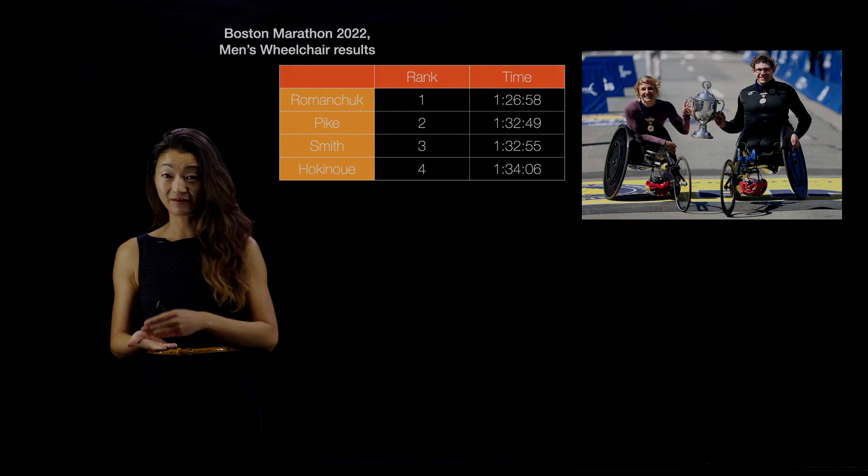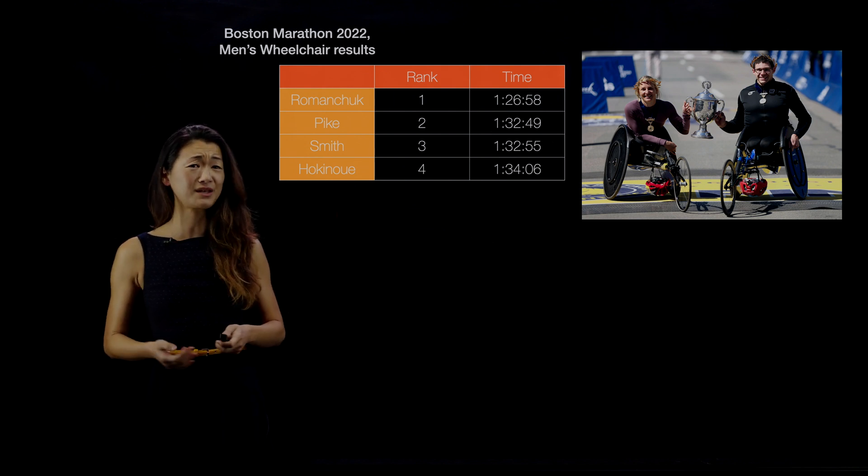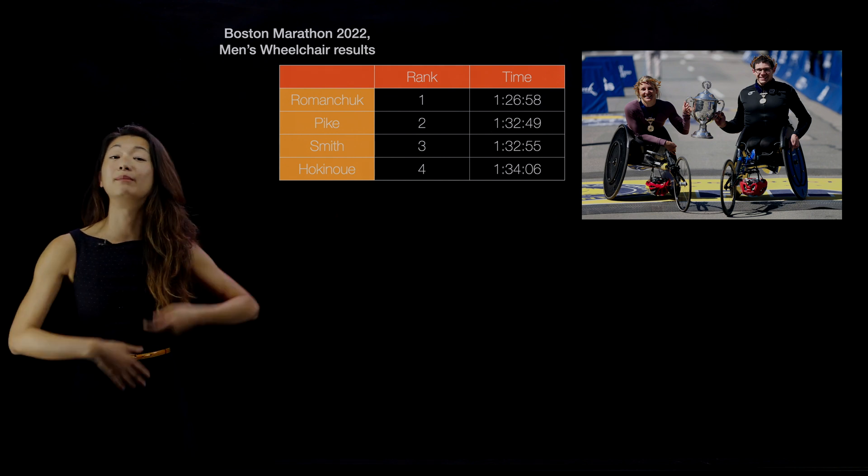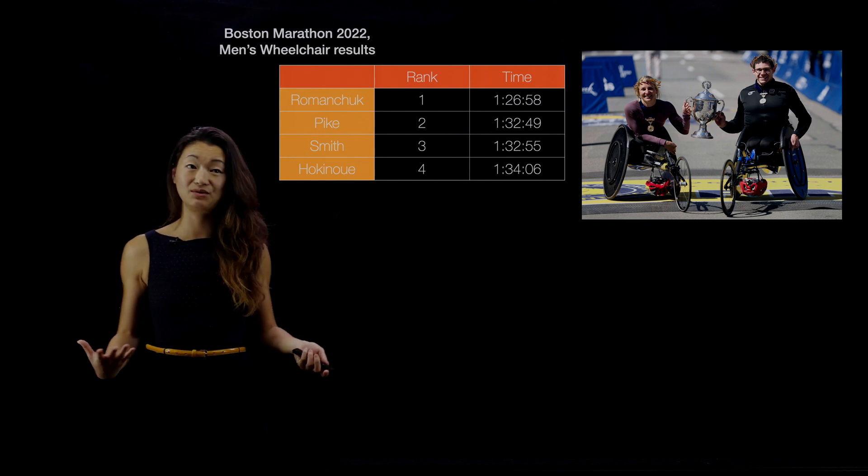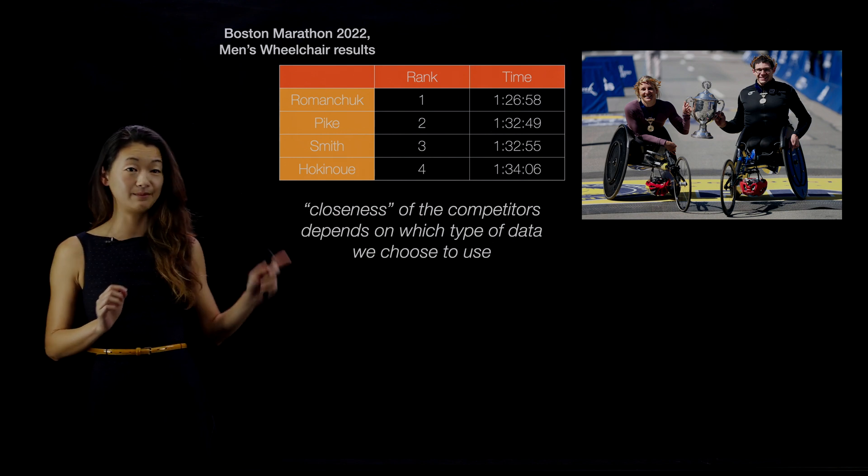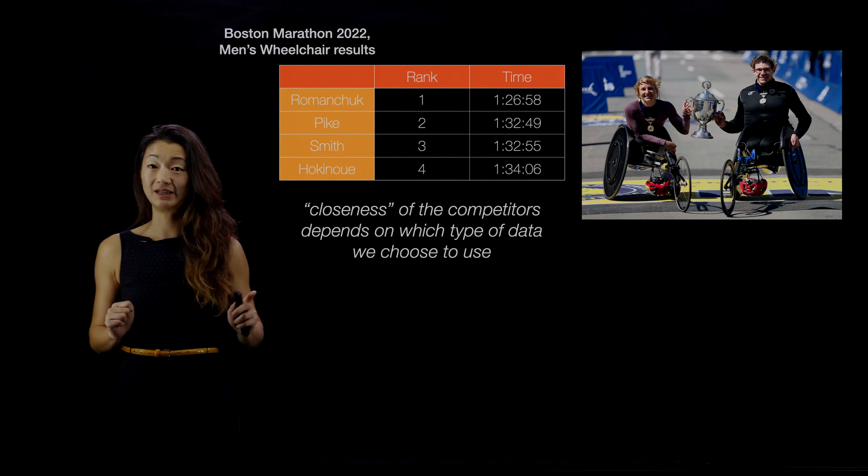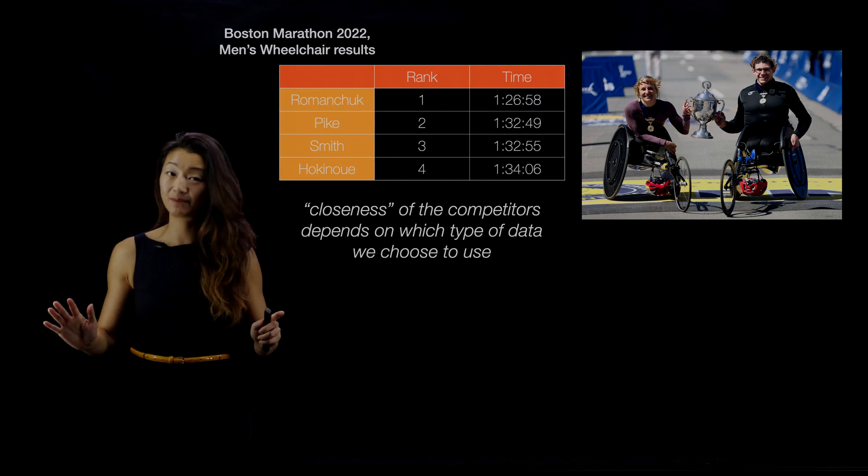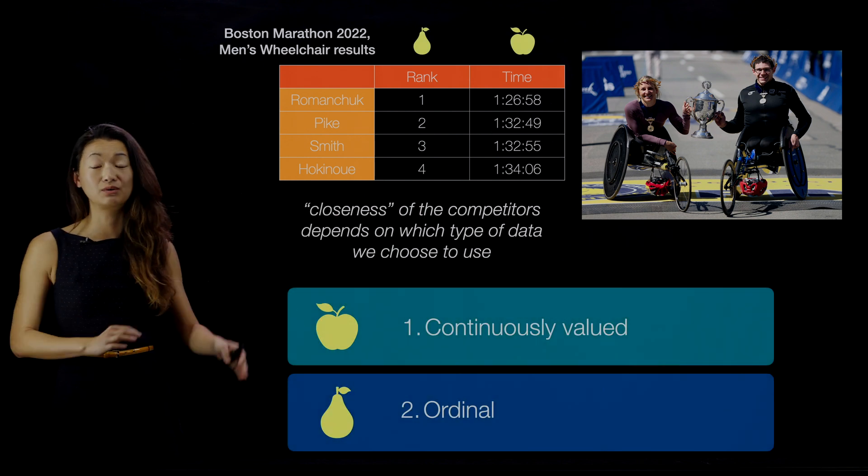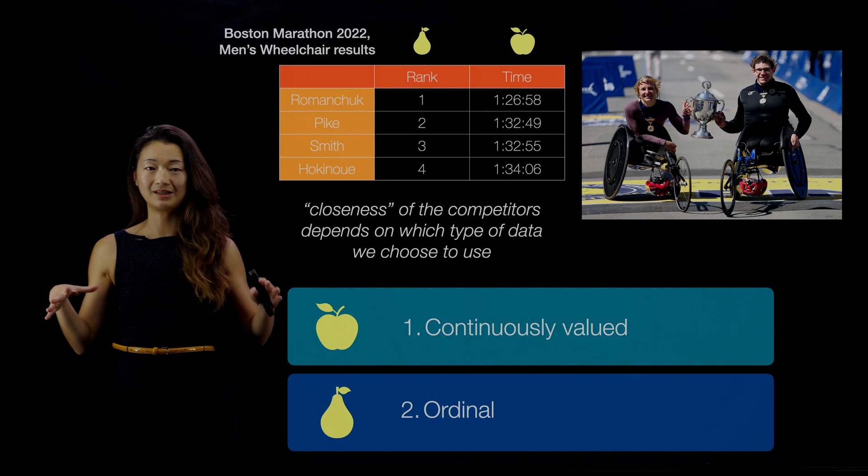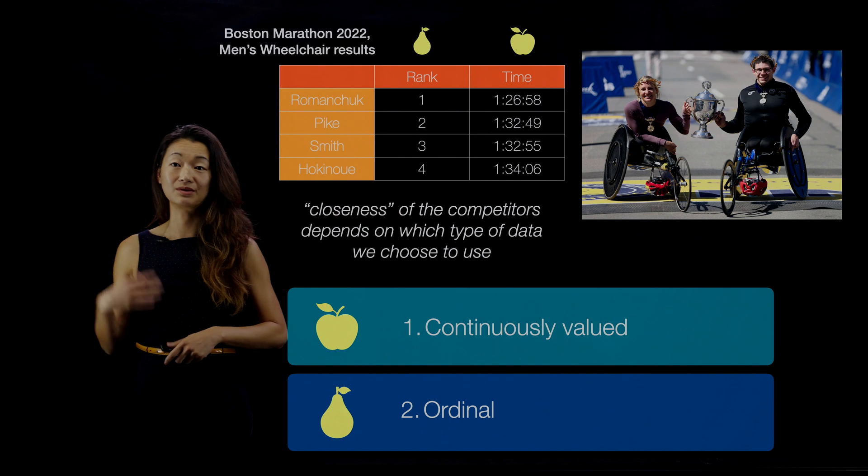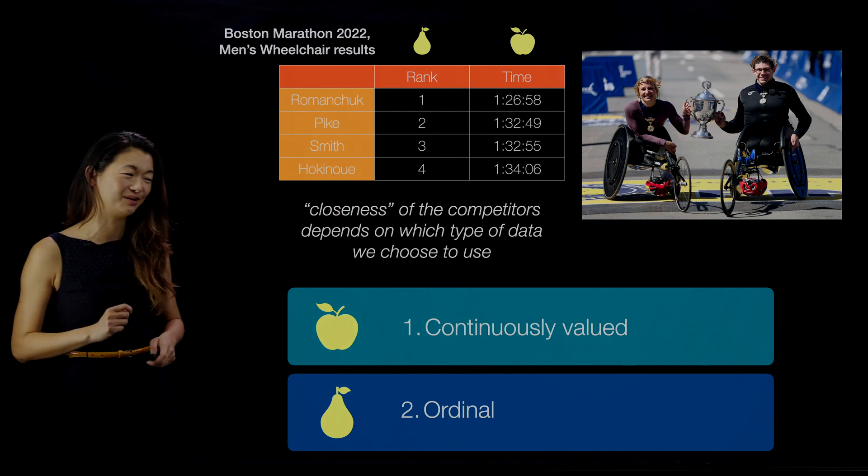But if we were to use the ordinal variable instead and look at their ranks in terms of where they came in, then you would say that one is just as far away from two as two is from three. So it kind of matters here and there's no right answer. This is the same results and we could be running our models and using our visualization techniques using either of these columns and dimensions of data. But it matters which one you pick because the closeness of these competitors depends on which type of data we had chosen to use. And like I said, there's no right answer, but it's important to pay attention because this notion of closeness and how they're defined for continuously valued and ordinal variables is the underlying assumption that's made by all of the visualization techniques and most of the machine learning and data science models that we'll be talking about in the rest of our analyses.